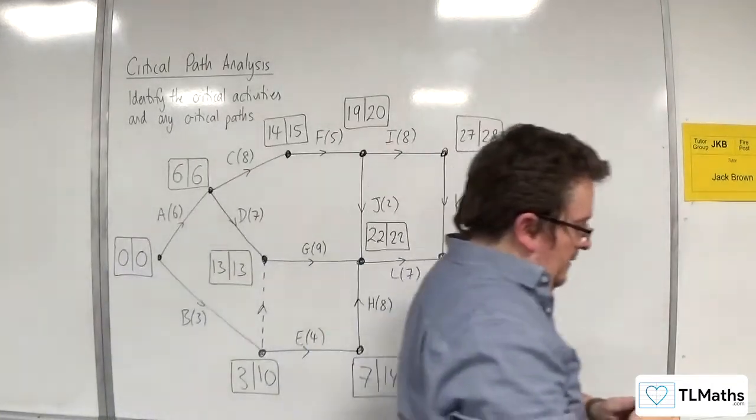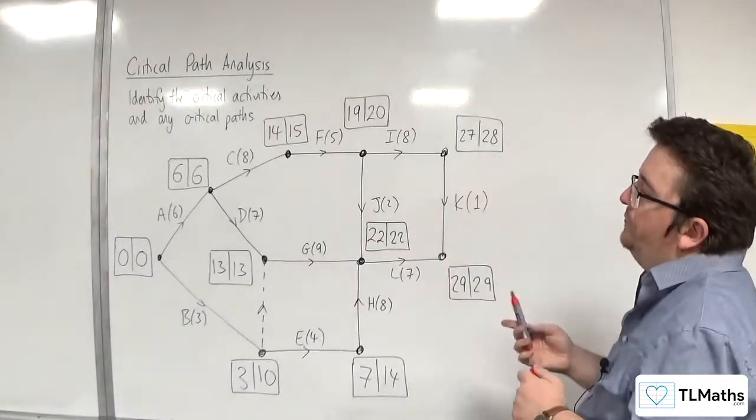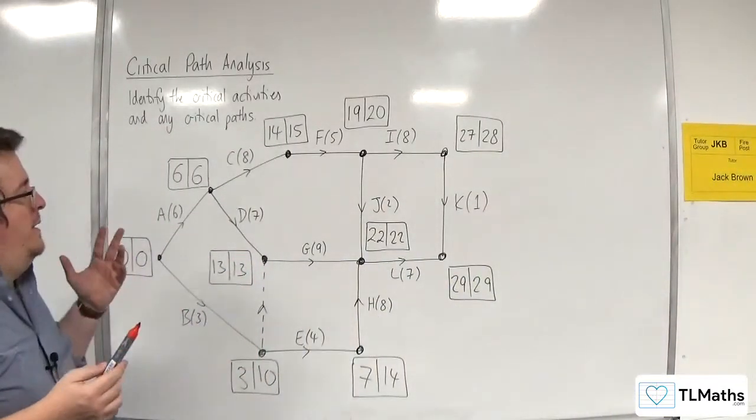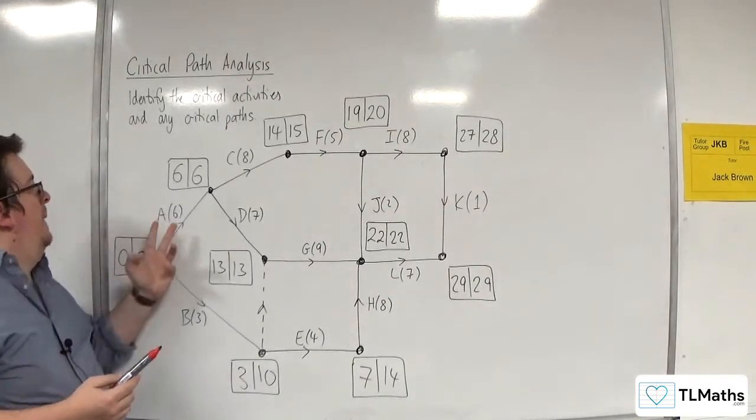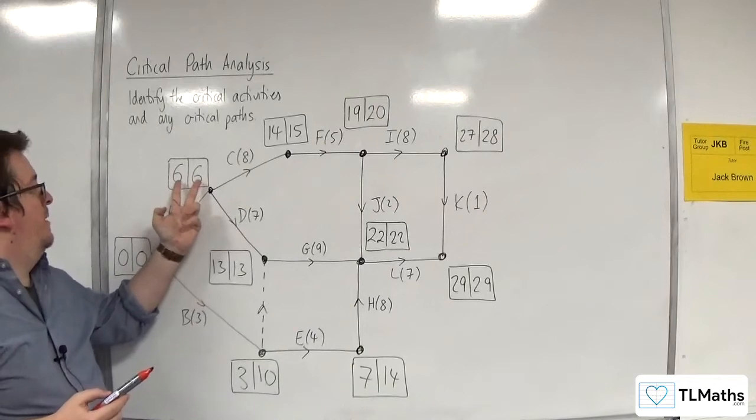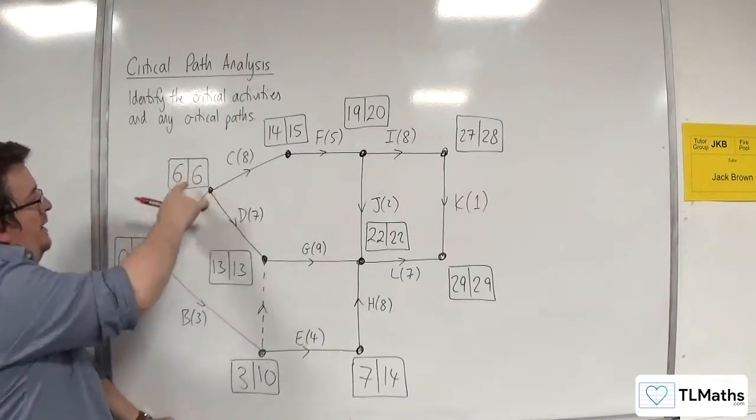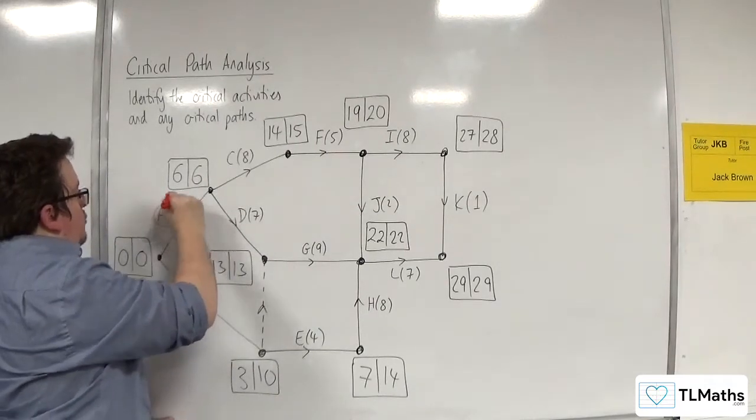Right, so now that we've got that, we now need to identify the critical activities. So you're looking for activities where the start node has the same pair of numbers, and the finish node have the same pair of numbers. And also, that 0 plus 6 is 6. So this one is definitely a critical activity.